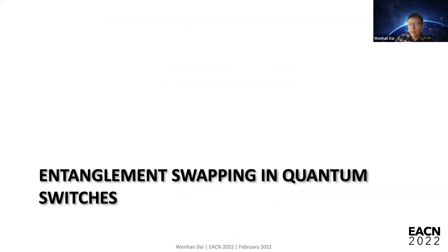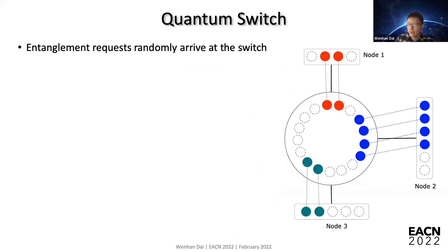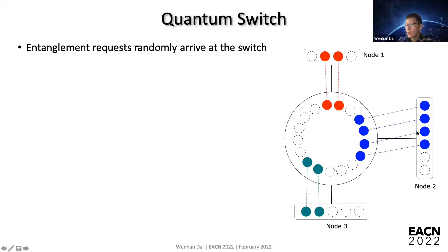Now we consider another setting: instead of a generic quantum network, we consider a special case called a quantum switch. A quantum switch is a device corresponding to a star-shaped quantum network. You have a quantum switch at the center and N end nodes, with channels only between the switch and the end nodes — no channels among the end nodes themselves.